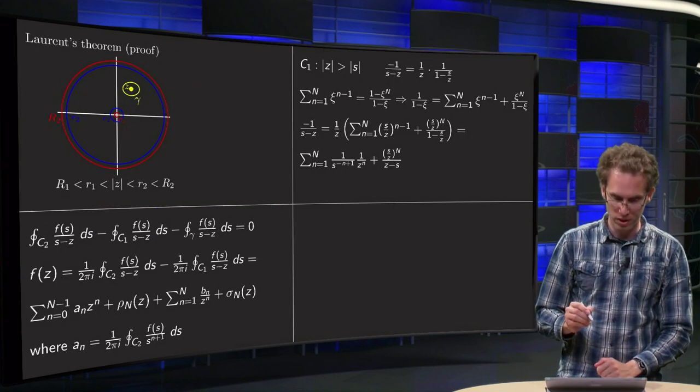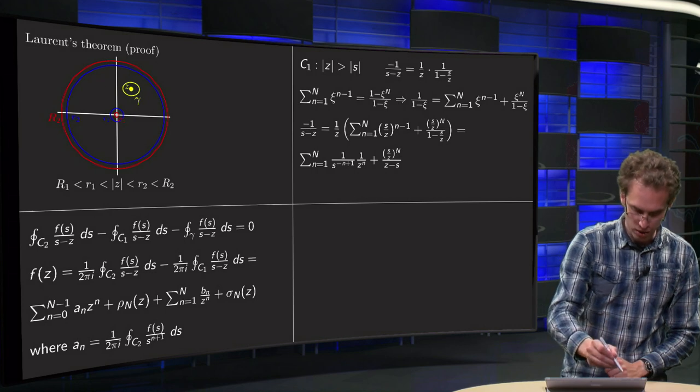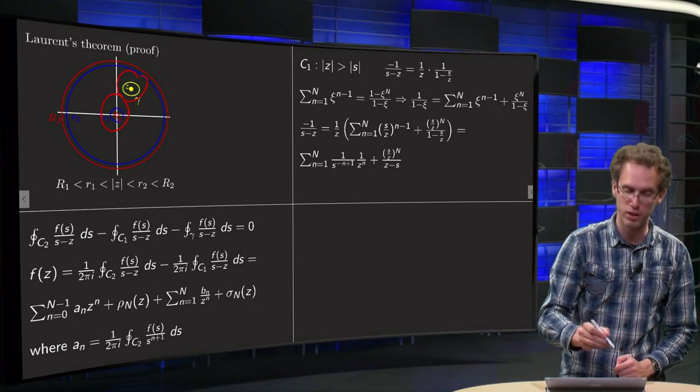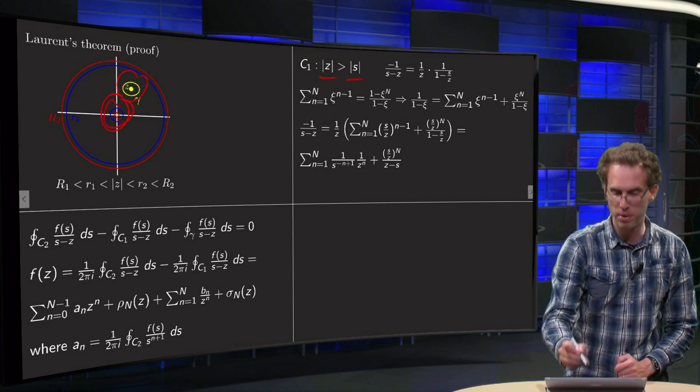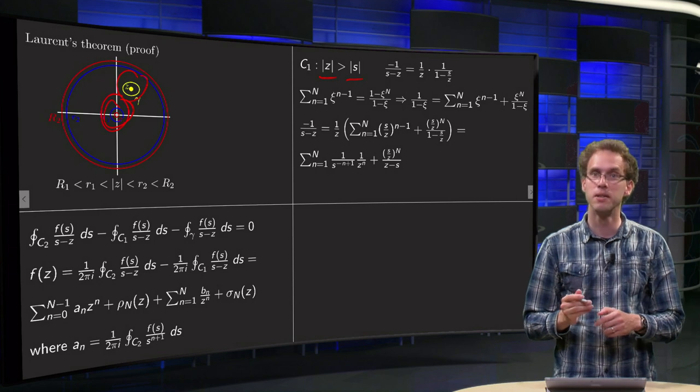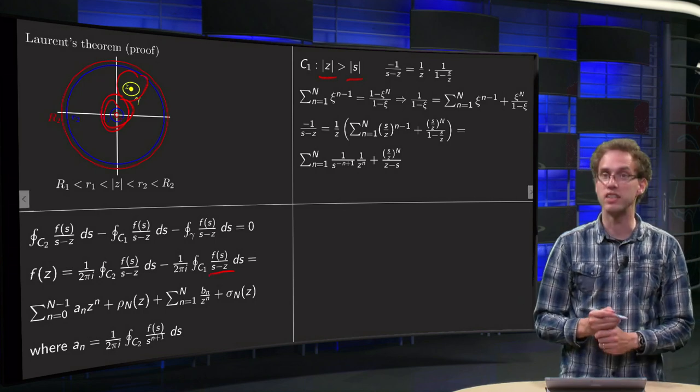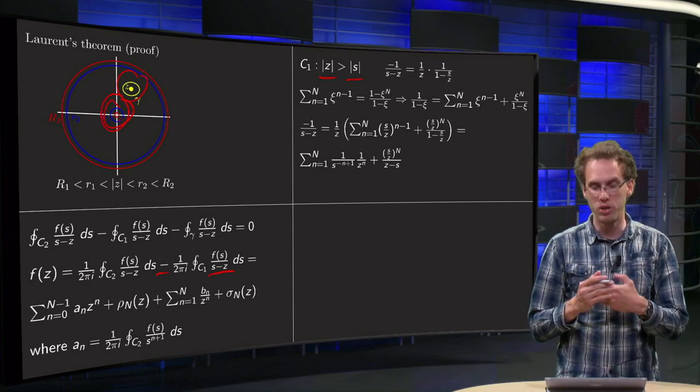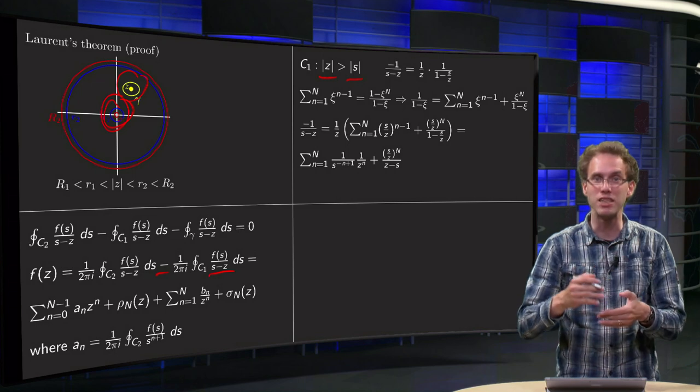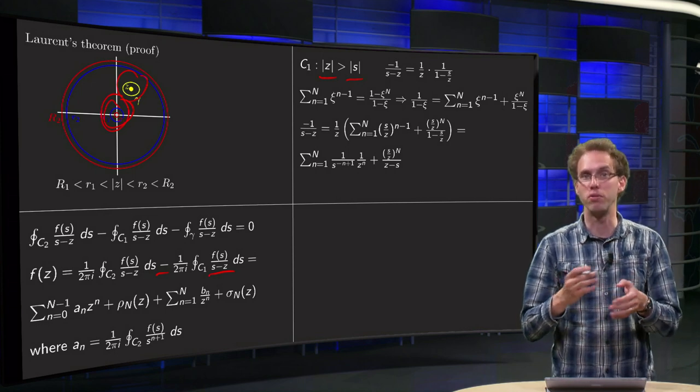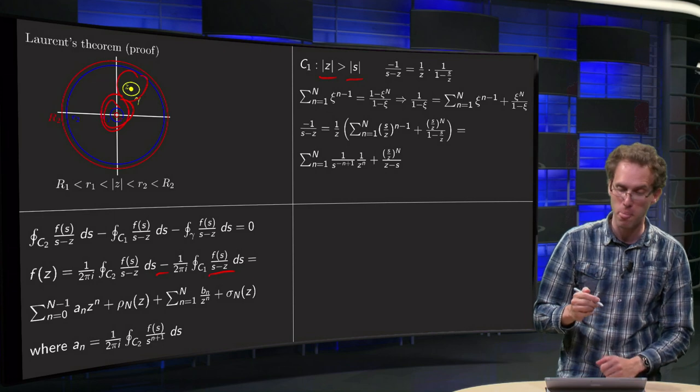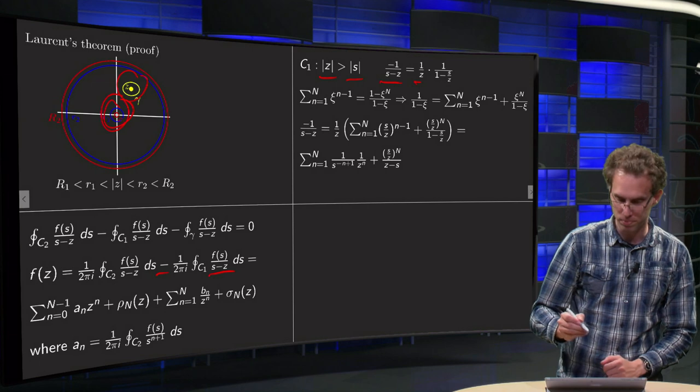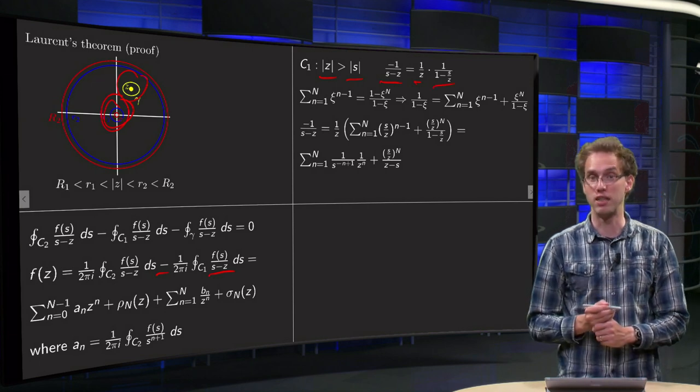So what do we know? Well, on this inner circle, on this C1, we know that the norm of z is very far from the origin compared to what is happening here, so the norm of z is bigger than the norm of s. So we have this 1/(s-z) with an additional minus sign, minus 1/(s-z), and we want to rewrite it in quotients of s/z, because s/z will be a small parameter. We want to expand in a small parameter. So minus 1/(s-z), we can take out 1/z, equals 1/z times 1/(1-s/z).